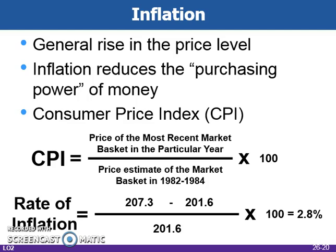To measure inflation, subtract last year's price index from this year's price index and divide by last year's index — which is the percent change formula — then multiply by 100 to express this as a percentage. In this numerical example using CPI data for 2007, there's a price index of 207.3, and 2006 has a price index of 201.6. You can calculate the inflation rate and find that it is 2.8%.